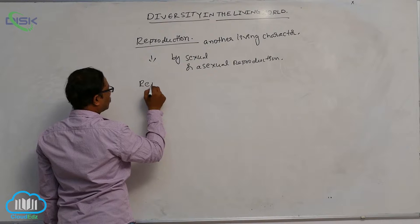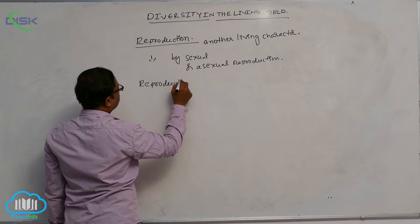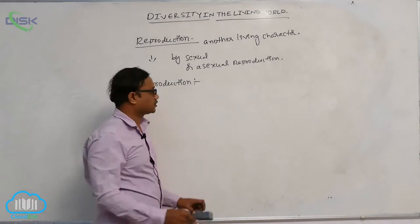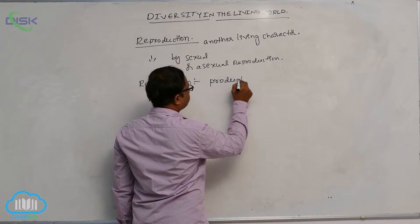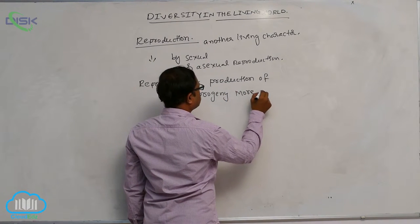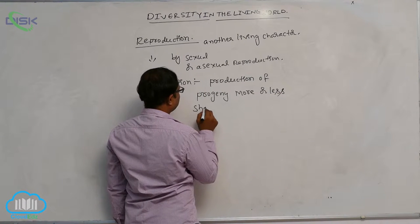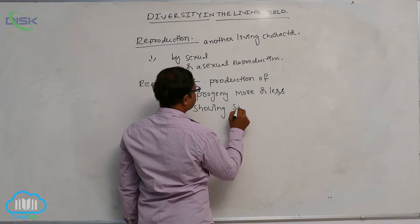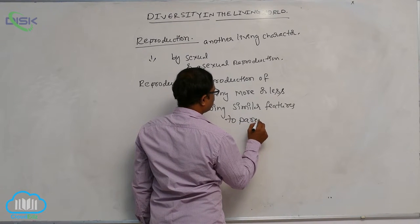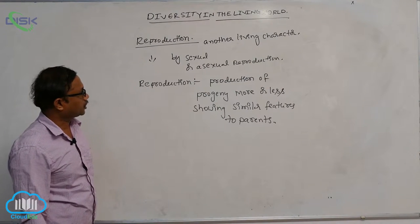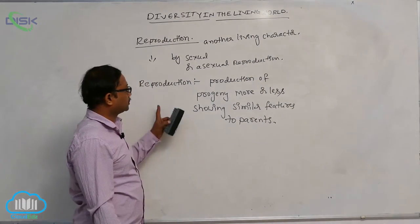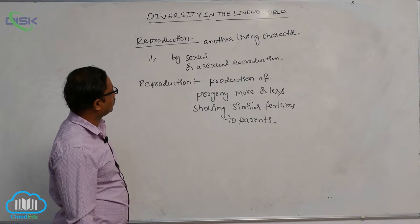Reproduction refers to the production of progeny showing more or less similar features to the parents — they are not completely identical to the parents. That is known as reproduction. So reproduction is of two types: either sexual reproduction or asexual reproduction.